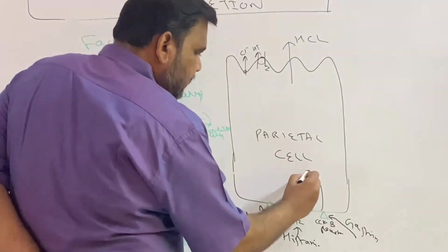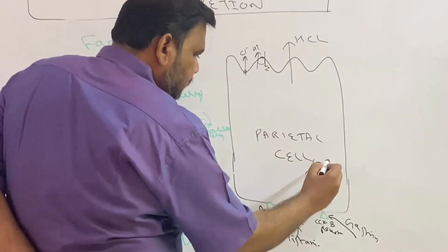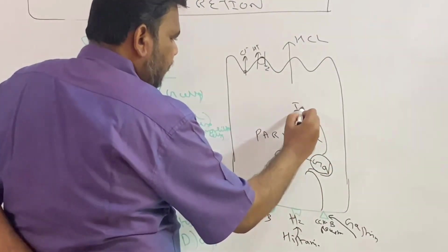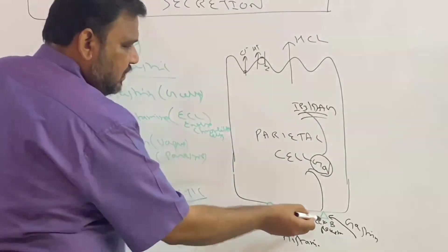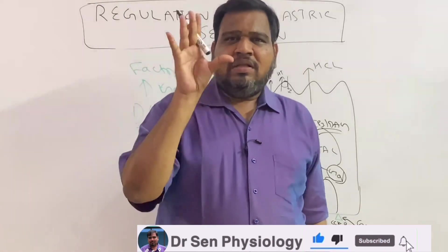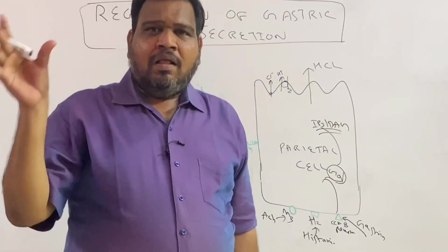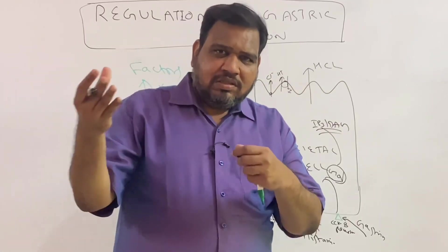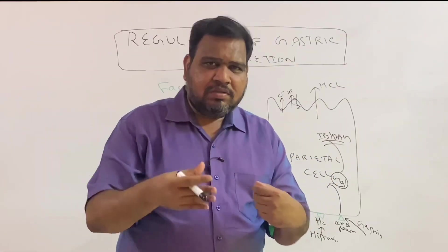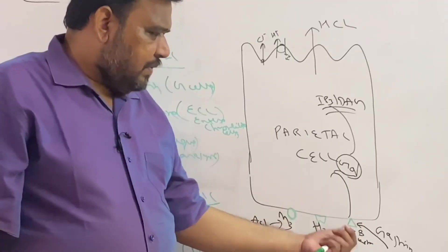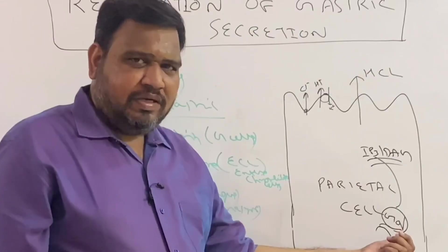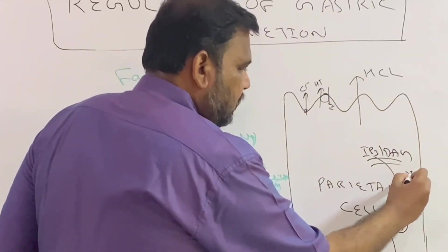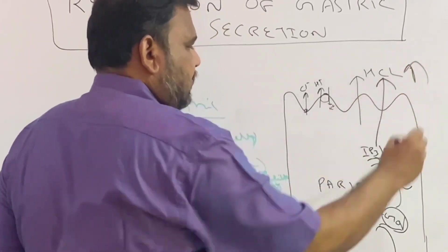The mechanism of action of CCKB receptor activation is via GQ protein. Gastrin is secreted from G cells of the antrum. Once gastrin binds to the CCKB receptor, the GQ protein is activated, which triggers the IP3-DAG pathway, causing calcium release. This IP3-DAG pathway ultimately leads to HCl secretion.